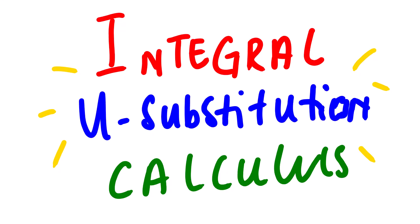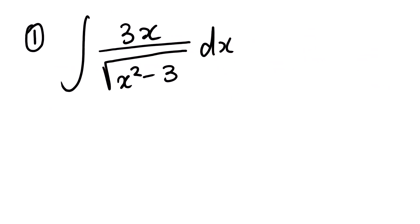Today's lesson video we're going to look at integration using U-substitution. This is calculus. Let us start. This is our first example. Now to use U-substitution, in most cases we look at the part which has the highest power. In this case we have 3x over square root of x squared minus 3. We can see that the part which has the highest power is x squared minus 3.